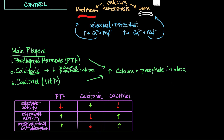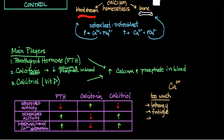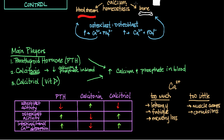Why does the concentration of free calcium ions in the blood matter so much? Why does our body have this elaborate system of calcium homeostasis? The concentration of calcium ions in the blood has very important physiological effects. Too much calcium leads to hypo-excitable cell membranes, resulting in lethargy, fatigue, and memory loss, whereas too little calcium in the blood leads to muscle cramps and convulsions. The endocrine system plays a critical role in calcium homeostasis through its effect on bone remodeling and calcium absorption.